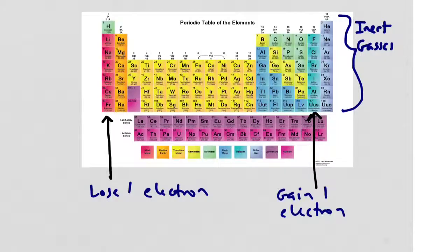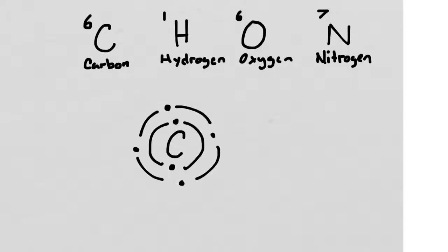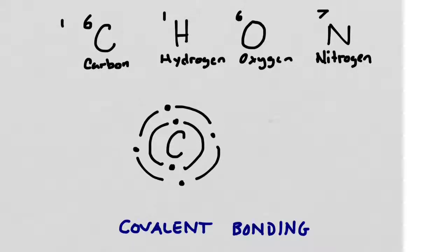Ionic bonds tend to form with elements on opposite extremes of the periodic table. But for elements in the middle, it would be a lot of work to lose or gain three or four valence electrons, so they do something a little different. Carbon engages in what is called covalent bonding, where it shares electrons with other atoms instead of transferring them.